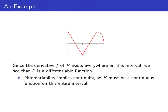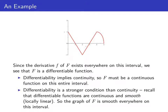Notice that big F has a derivative — its derivative is little f — and this derivative is defined on the entire interval. So our function big F, our antiderivative, is a differentiable function. And remember, a differentiable function is continuous. So big F has to be continuous on this interval. Differentiability is a stronger condition than continuity — in fact, differentiability means continuous and smooth. So our antiderivative big F will be a smooth curve on this interval. We want to keep that global behavior in mind as we draw the graph.